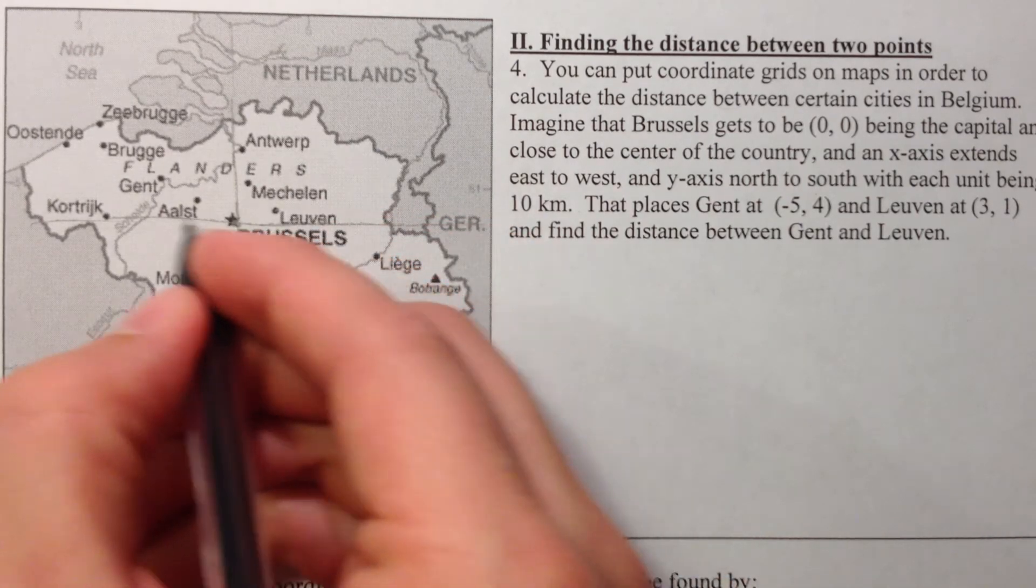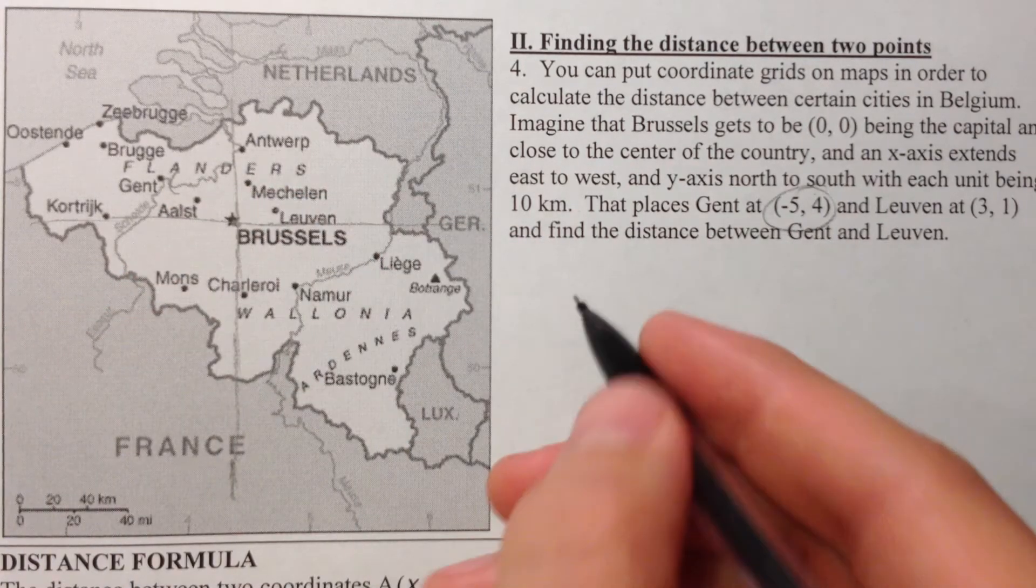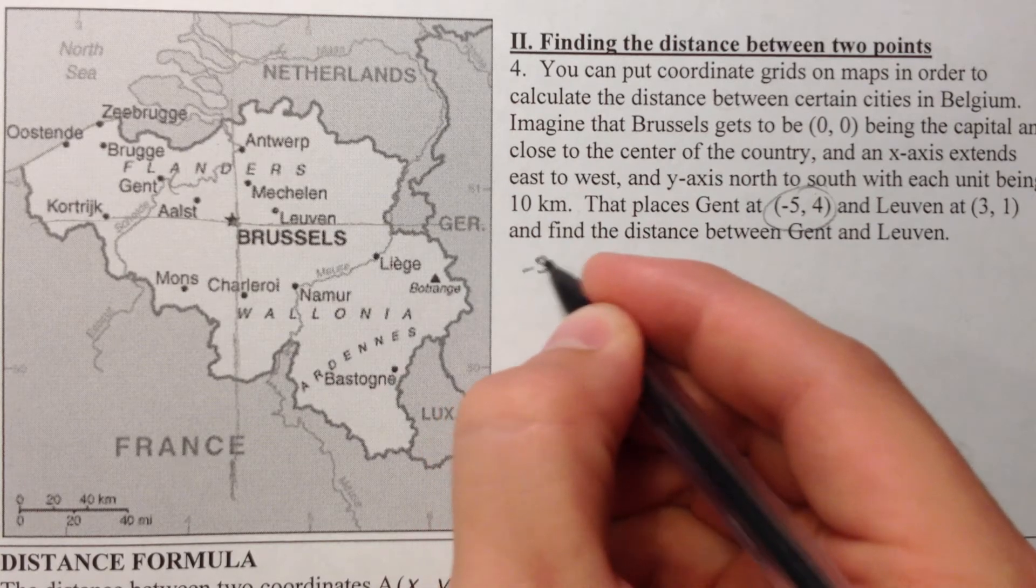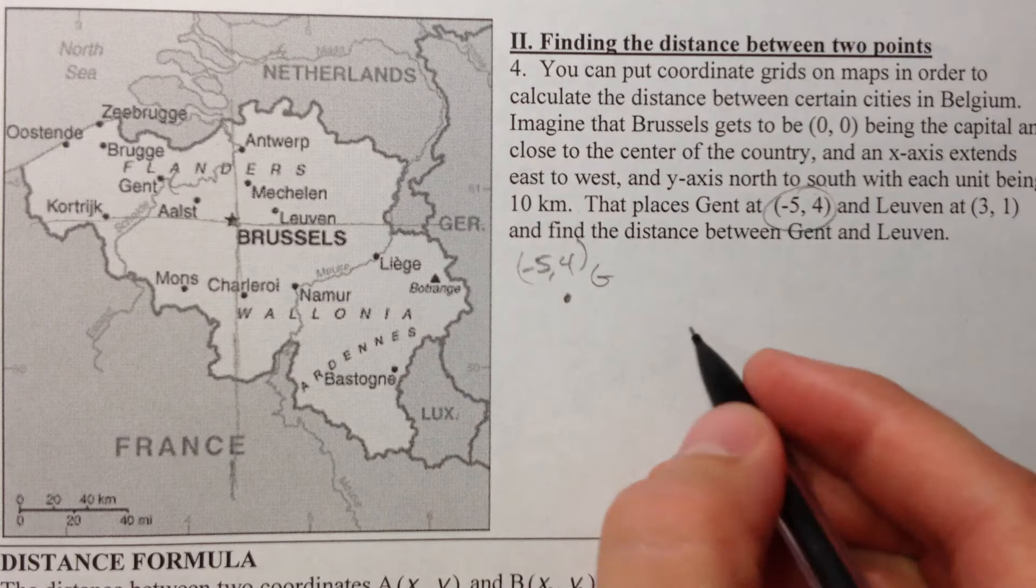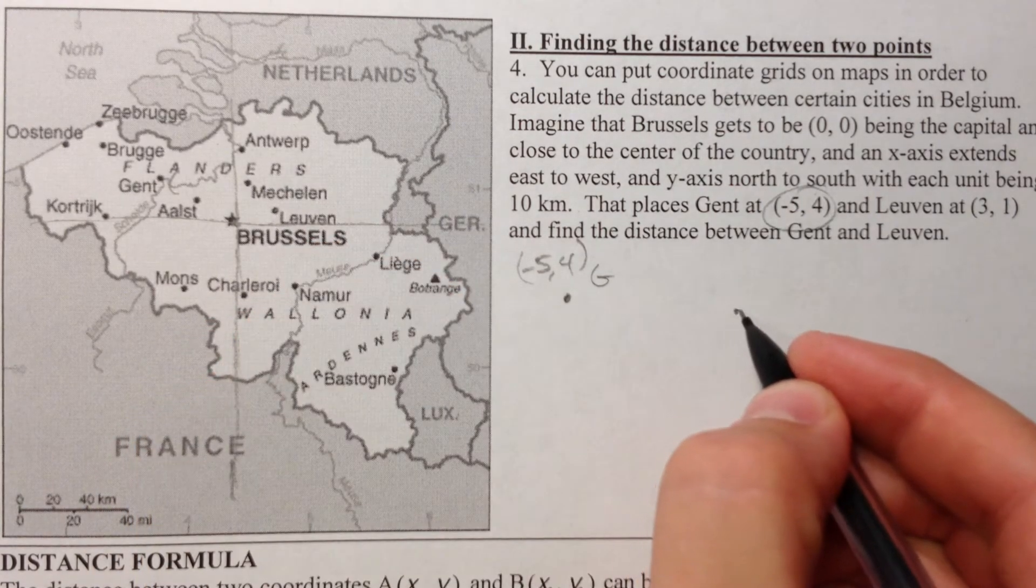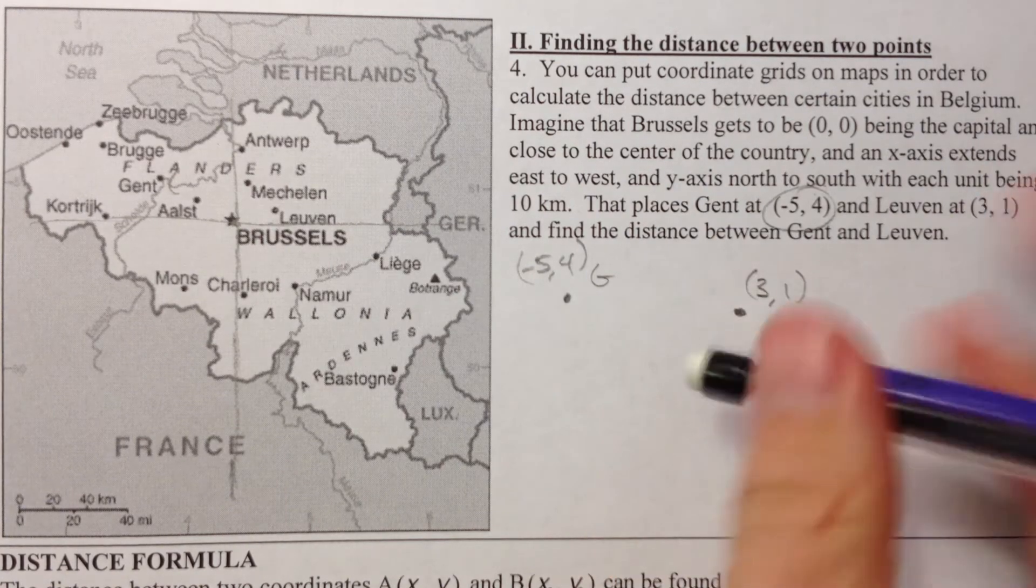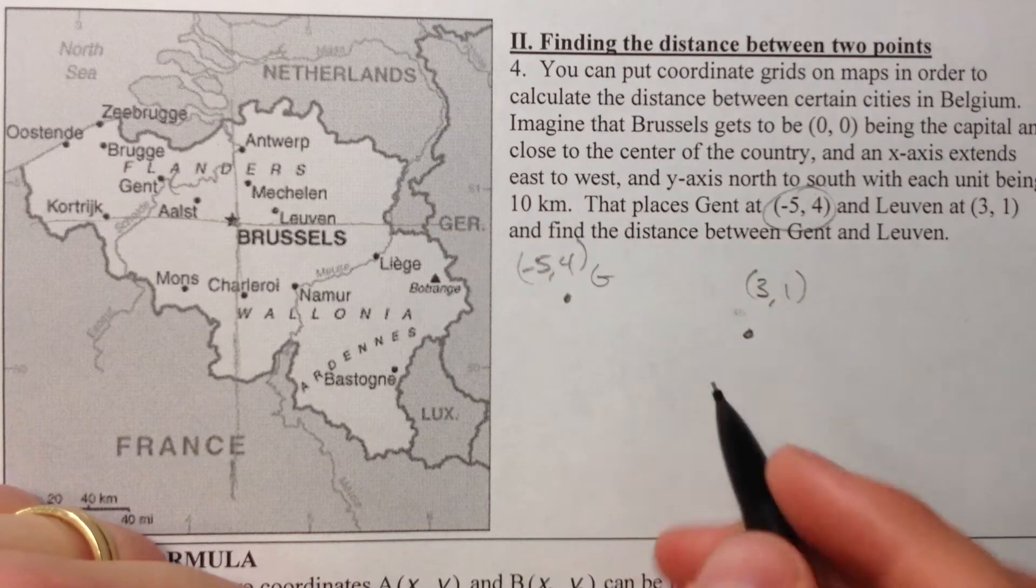And maybe Ghent is going to be to the left, so that's a negative, and we're going to make that negative 5, 4. That's going to be point G. And then Leuven is to the right and up, but not quite as much. So, it's going to be at 3, 1. And so that's going to be right here.